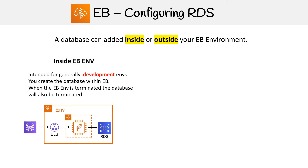Let's talk about inside the Elastic Beanstalk environment. When you go to create an environment through the console, you'll have the option to create an RDS database. If you do that, it means it's going to be within the Elastic Beanstalk environment. The thing is, if you do this, whenever this environment is terminated for any reason, it will take out the database with it.